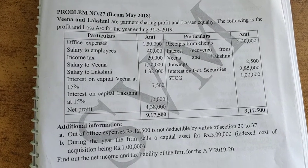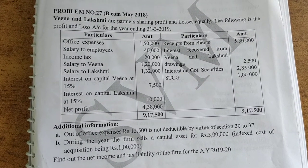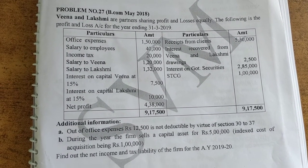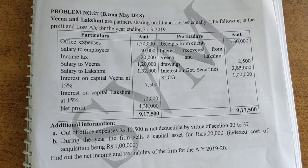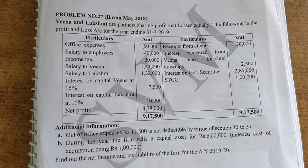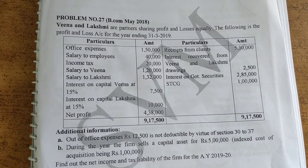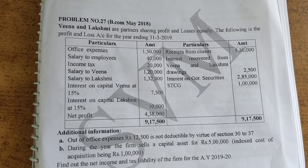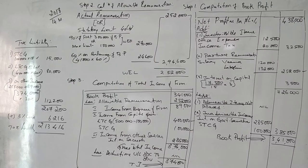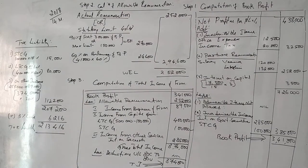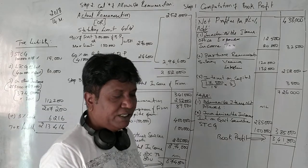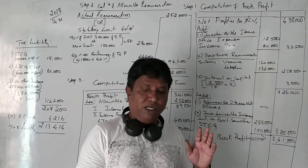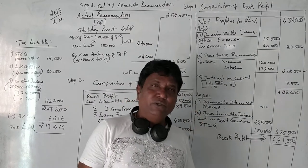The second question given in 2018 — luckily two questions have been asked in 2018 for 14 marks. Both the questions are simple. We will see how we can solve this question on the board. The question states: Now and Veena are partners sharing profits and losses equally. The following is the profit and loss account for the year ending March 2019.